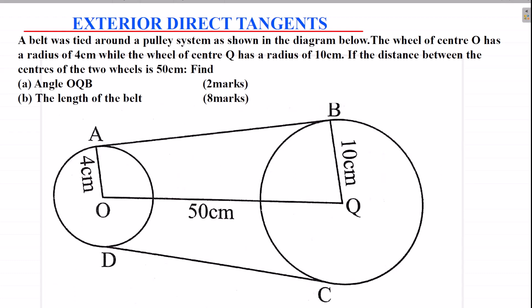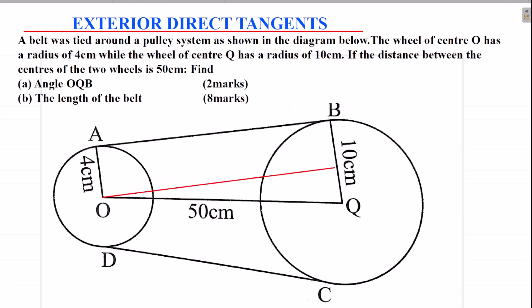We shall begin by finding the angle OQB. To find that angle, there's something you'll be required to do: drawing a line that is perpendicular to line BQ. We're going to draw that line perpendicular to BQ, and that line should be parallel to AB. So there's a triangle that you're going to form there.